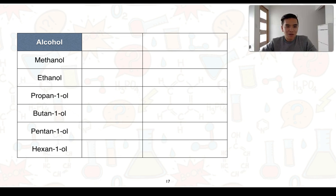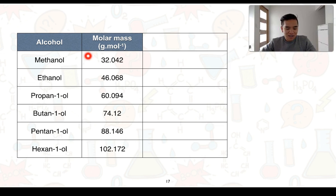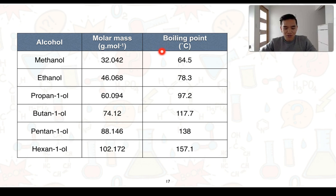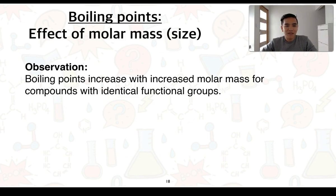For another example, we've got alcohols going from the simplest being methanol up to hexan-1-ol. Each of these consists of one hydroxyl functional group. We can see that the molar masses are increasing, and we can also note that the boiling points show a similar increase like we did with the alkanes. So as you go to the bigger alcohols, the boiling points are increasing. The observation is that boiling points increase with increased molar mass for compounds with identical functional groups, which we can also link to identical or similar polarity.